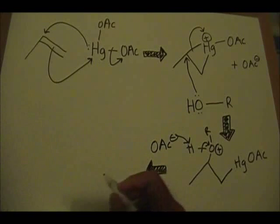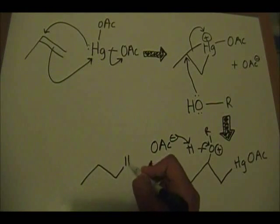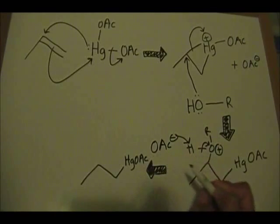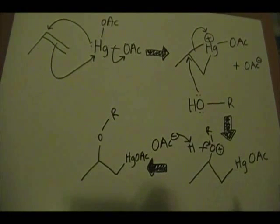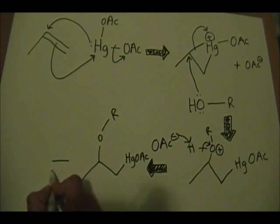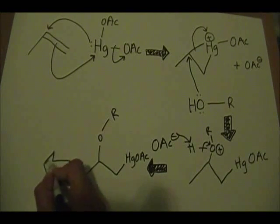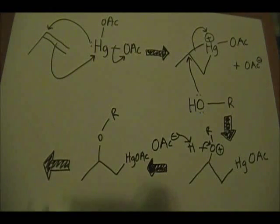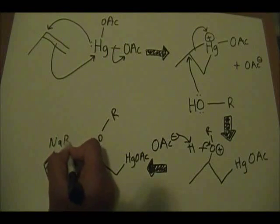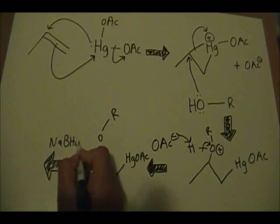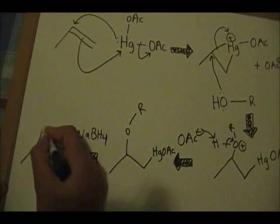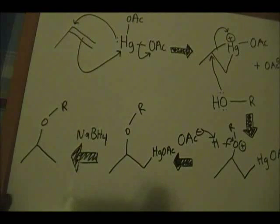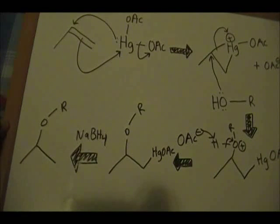So you form your Hg-OAc still attached, and now you have your ether. The final step — pretty standard for both this reaction and oxymercuration-demercuration — is the sodium borohydride step. For this step we don't show any electron-pushing arrows. We simply write sodium borohydride and draw the product: your Markovnikov product, which is the ether in the more substituted position.